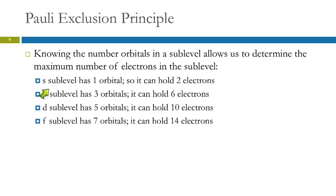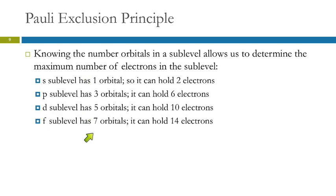In the s sublevel there's only one orbital, so it can hold only two electrons. The p sublevel has three different orbitals, each holding two electrons, for a total of six. The d sublevel has five orbitals and holds ten electrons. The f sublevel has seven orbitals and holds fourteen electrons. Notice these are odd numbers — 1, 3, 5, 7 — and you just double those to get the electron capacity.